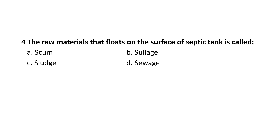The raw material that floats on the surface of a septic tank is called scum. Sullage is the waste material that does not contain human excreta. Sewage is the waste material that contains human excreta. Sludge is the solid or semi-solid material that settles down at the bottom of the waste.